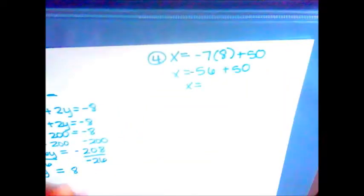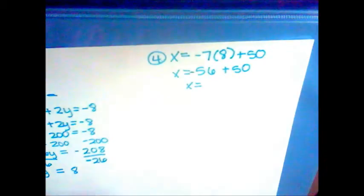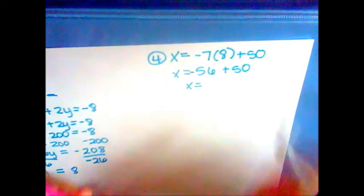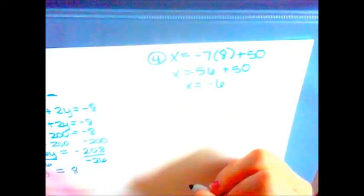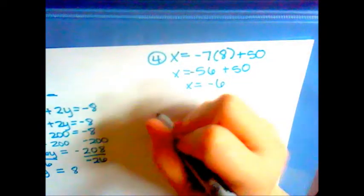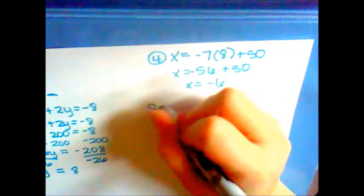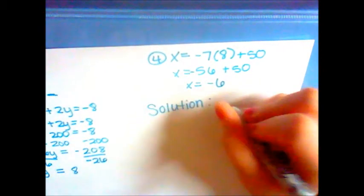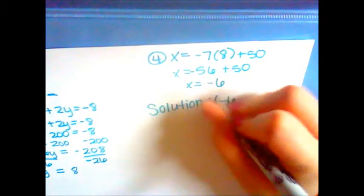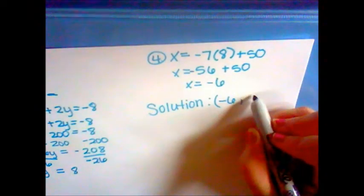That's negative 56 plus 50, which equals negative 6. So our solution is negative 6, 8.